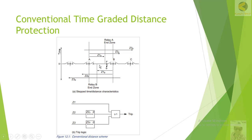Unit protection means that if we consider the line as a unit, and there is a fault on that unit, both ends of the unit should trip immediately. That is the type of unit protection.